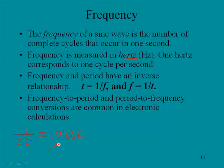That's the fractional equivalent of 16.66 milliseconds. Also, frequency equals one over time. So if we took that value and we said one over 0.01666, we would get 60. So time equals one over frequency, and frequency equals one over time. Frequency to period and period to frequency conversions are common in electronic calculations.